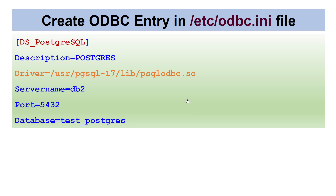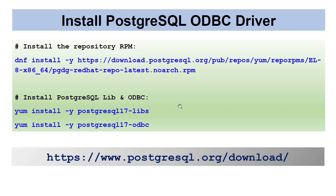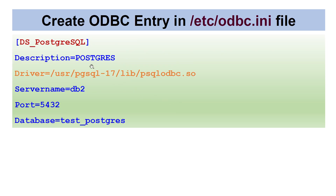Once the ODBC driver is installed, go ahead and create the ODBC entry in the /etc/odbc.ini file. This particular driver will be installed as part of those packages. Here, we define the data source name — I'm calling it data_source_postgresql — that's your choice. This is the driver obtained after installation, the description is your choice, the server name is where the PostgreSQL database is running, the port is the PostgreSQL port, and the database name is the PostgreSQL database we will be accessing from Oracle. Create this ODBC entry in /etc/odbc.ini.